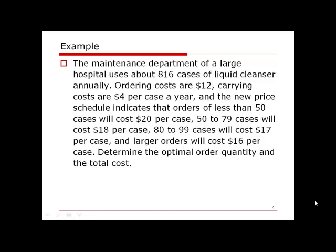If we place a larger order every time, we can enjoy a price discount. So we need to consider this price discount in our cost evaluation. The total cost should be based on the sum of holding cost, ordering cost, plus the purchasing cost. The four price levels are $20, $18, $17, and $16.